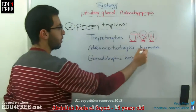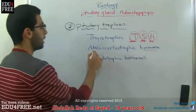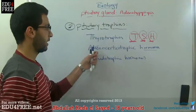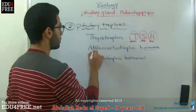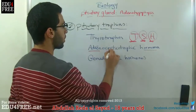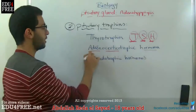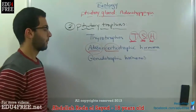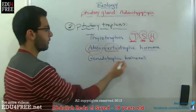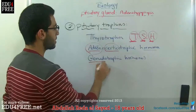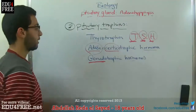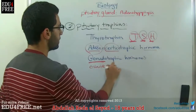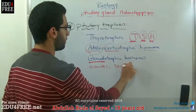We have the adrenocorticotrophic hormone, which stimulates the adrenal cortex of the kidney — that is why it is called adrenocorticotrophic: 'adreno' for adrenal and 'cortico' for cortex. Then we have gonadotrophic hormones, which stimulate the gonads — the ovaries in females and testes in males.